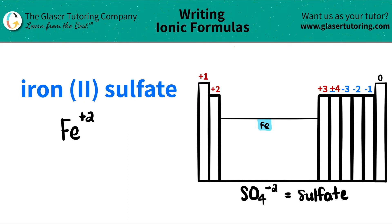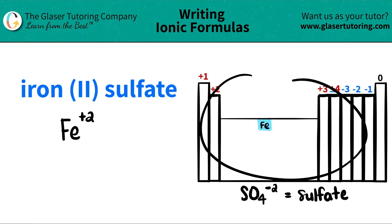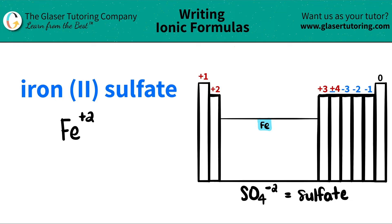Now I come over to sulfate. I see that there's an ATE ending, and ATE endings are not on the periodic table — they're polyatomic ions. For the sake of the video, I wrote down what sulfate is — just flashcard this out, do whatever you need to do to remember that sulfate is always SO4 with a negative two charge.